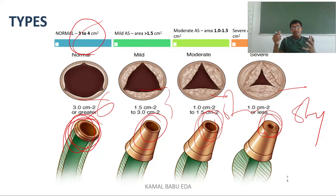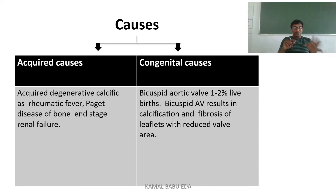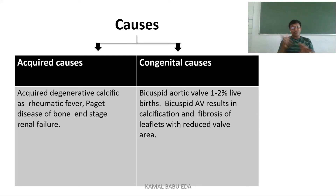Causes are classified as acquired and congenital. Acquired causes are mainly due to degenerative calcification, rheumatic heart fever, Paget's disease of bone, or end-stage renal failure. For congenital causes, about 1–2% of live births have bicuspid aortic valve problems. This bicuspid aortic valve defect results in calcification and fibrosis of the leaflets with reduced valve area, causing aortic valve stenosis.